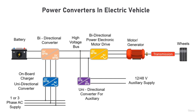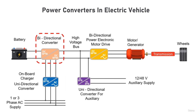An electric car uses a central DC bus called the high-voltage bus for exchanging power between various electric components, and the converters are responsible for controlling the power flows. The onboard charger is responsible for converting AC power from the grid to the central DC bus for charging the traction batteries — hence it is an AC-to-DC power converter.